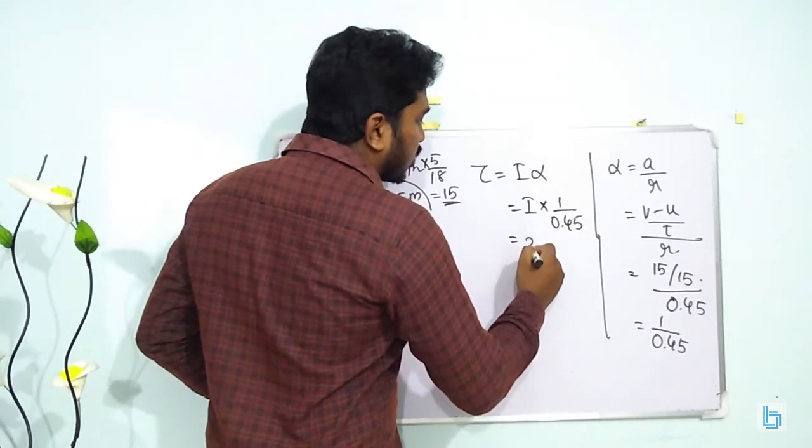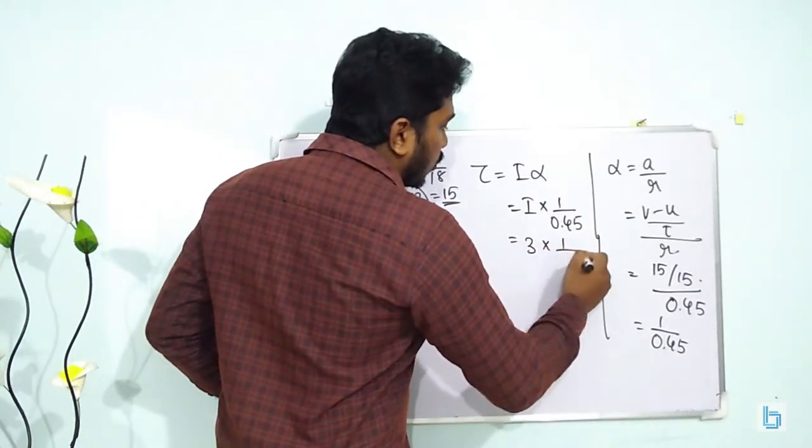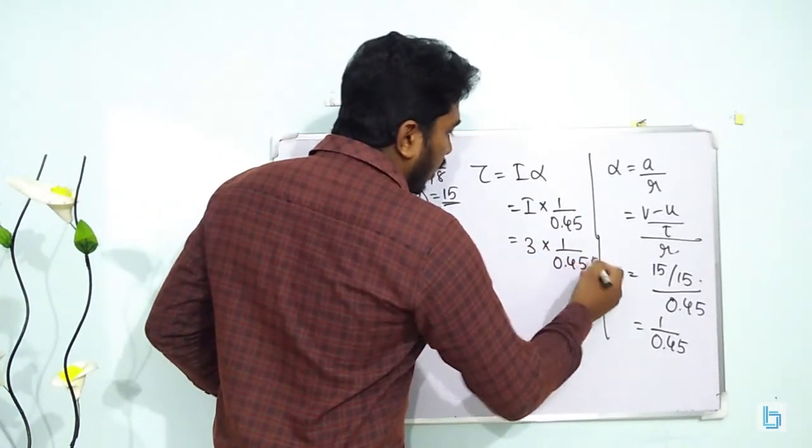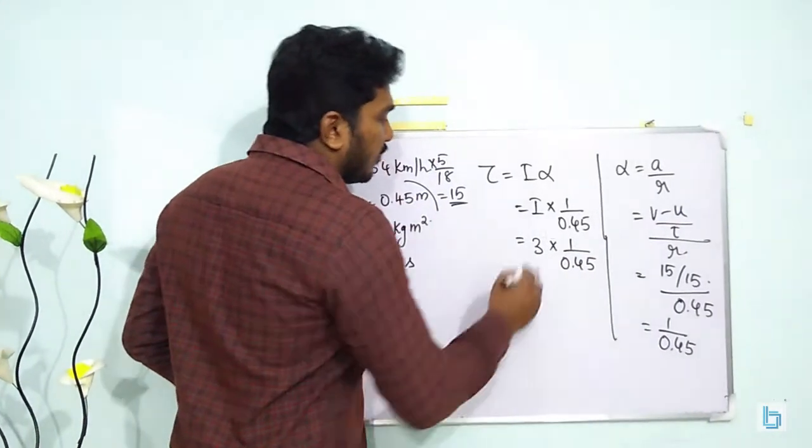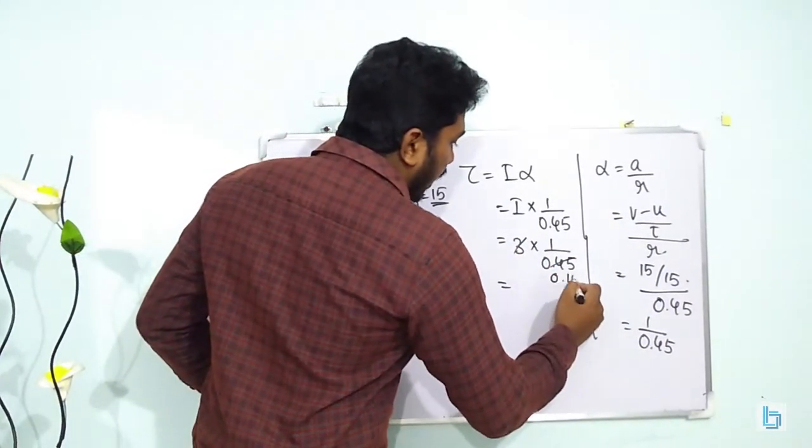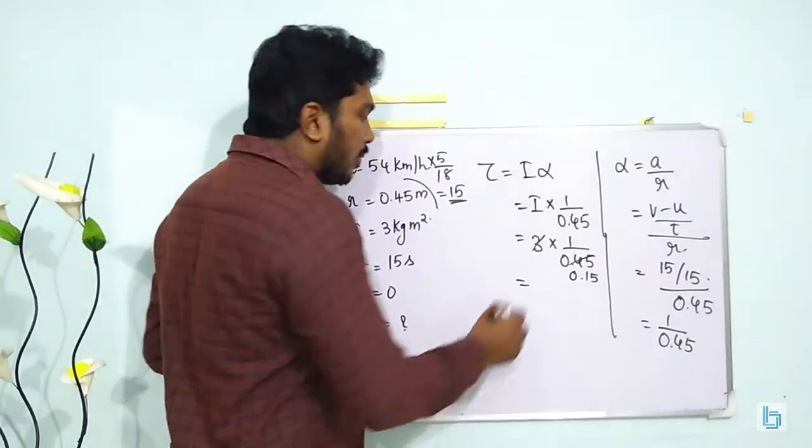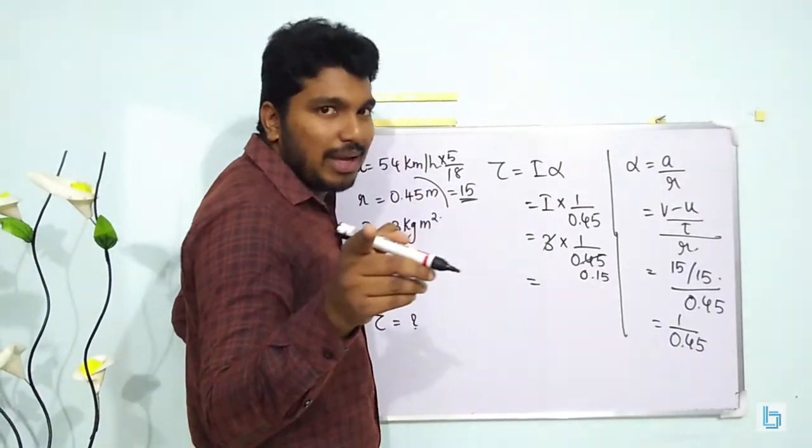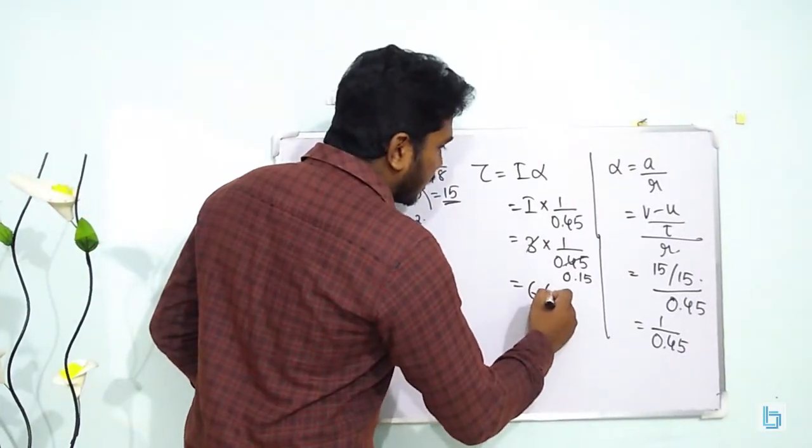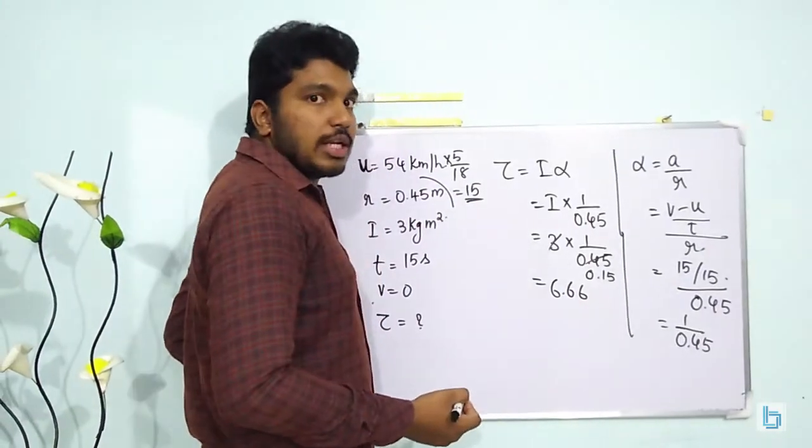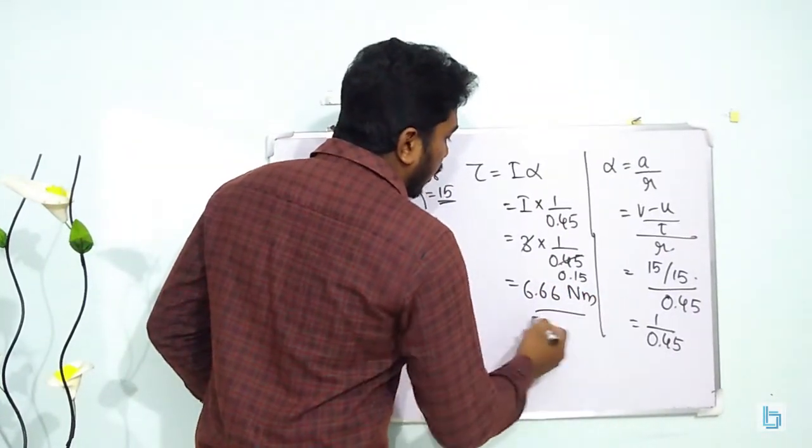Moment of inertia I is actually equal to 3. So 3 into 1 by 0.45 or that will be 0.15 or 100 by 15. 100 by 15 will be 6.66. Torque. What is a unit? Newton meter.